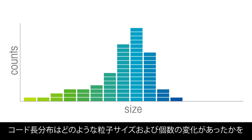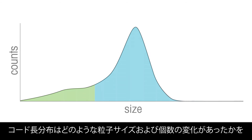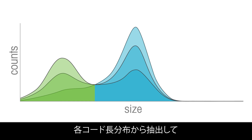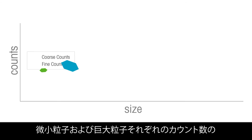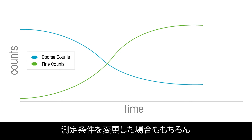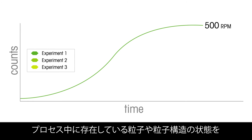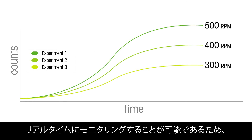The chord length distribution tracks how particle size and count change from the beginning until the end of a process. Statistics from each chord length distribution, such as counts in fine and coarse size classes, can be trended over time.